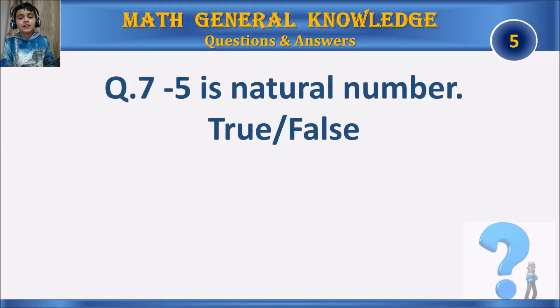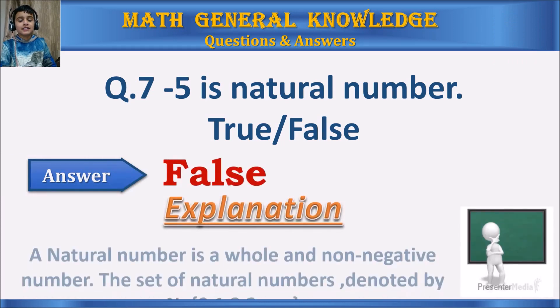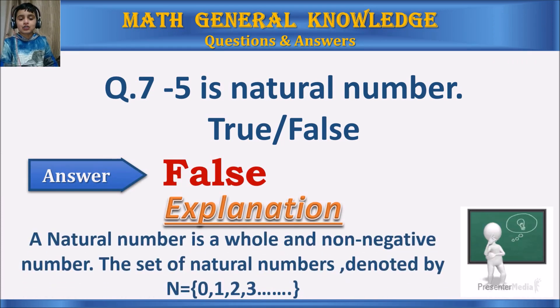Question 7: Minus 5 is a natural number, true or false? Your time starts. The answer is false. A natural number is a whole and non-negative number. The set of natural numbers denoted by N equals 0, 1, 2, 3, and so on.